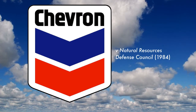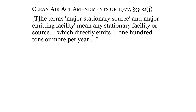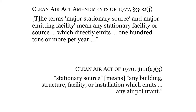How did the APA change things? The 1984 Chevron case is our landmark. Like the airbags case, it arose as a challenge to a deregulatory action by an official of the incoming Reagan administration — in this case, an action by the Environmental Protection Agency. At issue was the meaning of the term 'stationary source' in two different statutes. In the Clean Air Act Amendments of 1977, 'major stationary source' and 'major emitting facility' mean any stationary facility or source which directly emits 100 tons or more per year of specified pollutants. In the Clean Air Act first passed in 1970, 'stationary source' means any building, structure, facility, or installation which emits any air pollutant.